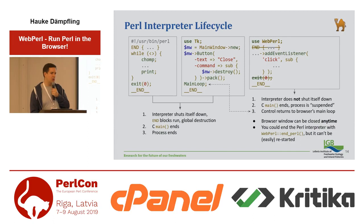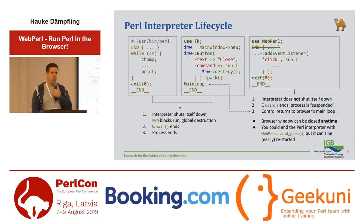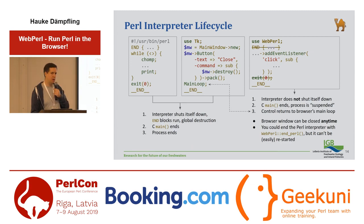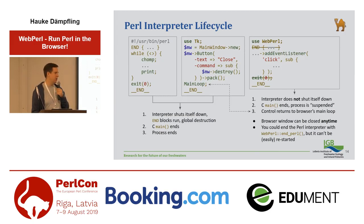This has a couple of consequences. The browser window can be closed at basically any time and there's practically nothing JavaScript can do to prevent that, so your interpreter may just go away. You can't rely on global destruction or end blocks being run. If you're saving a file, you should give the user some visual feedback so they know when it's safe to close the window. You can end the Perl interpreter — there is a function for that — so if you have a legacy script you're porting to WebPerl, you can shut down the interpreter normally. The problem is that Emscripten doesn't really provide a good way to restart a binary once you've ended it, so you basically only have one Perl interpreter per window, and once it's ended you need to reload the window to restart Perl.